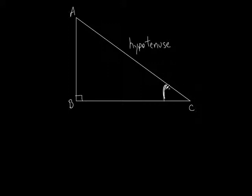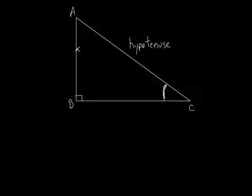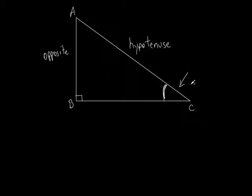If I'm talking about angle C, let's talk about side AB. What is side AB in relation to angle C? Is it right next to it? No — it's across from it. We don't say 'across' though, we say it's opposite. So I would call this the opposite side — opposite of angle C. I'm only dealing with angle C right now, so this side is opposite angle C.